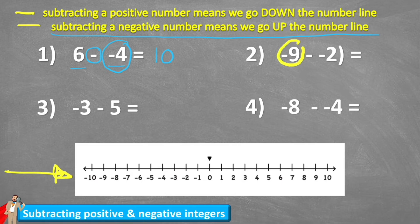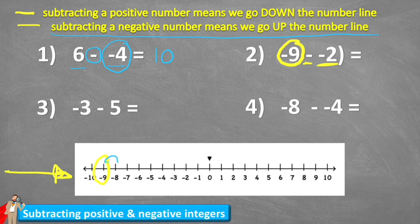This time we're starting at negative nine — find that on the number line, there it is. And this time I am subtracting a negative two. Now if I was adding a negative two, I would come one, two down my number line because that would be adding more debt. But this time I'm taking away some debt. So therefore I come up the number line: one, two — and I land at negative seven. So negative nine subtract a negative two leaves me with negative seven.